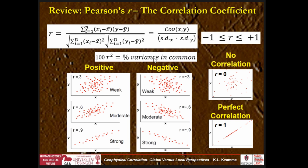Just to review: here's a weak positive, moderate, and strong positive correlation — highs with highs, lows with lows. Here are negative correlations from weak to strong. Here's no correlation where R is zero, and perfect correlation where it all fits on the line.